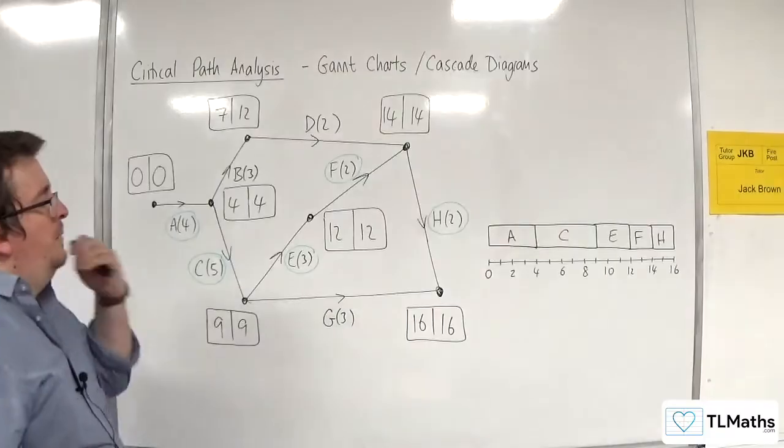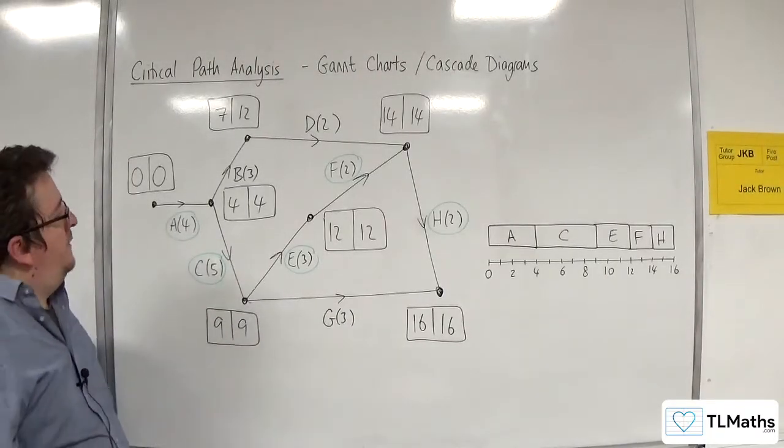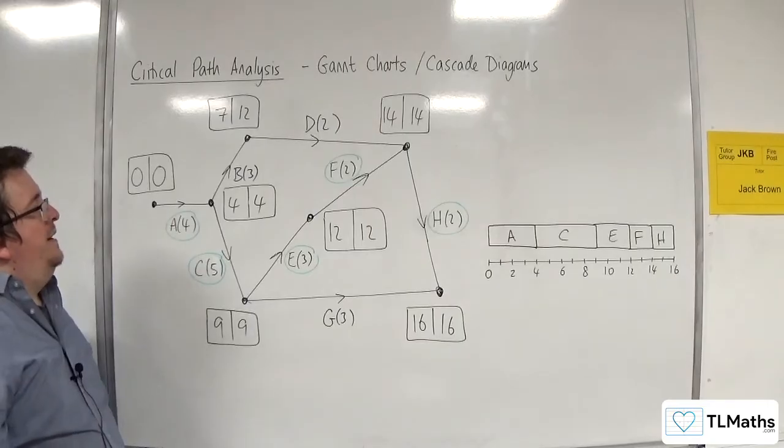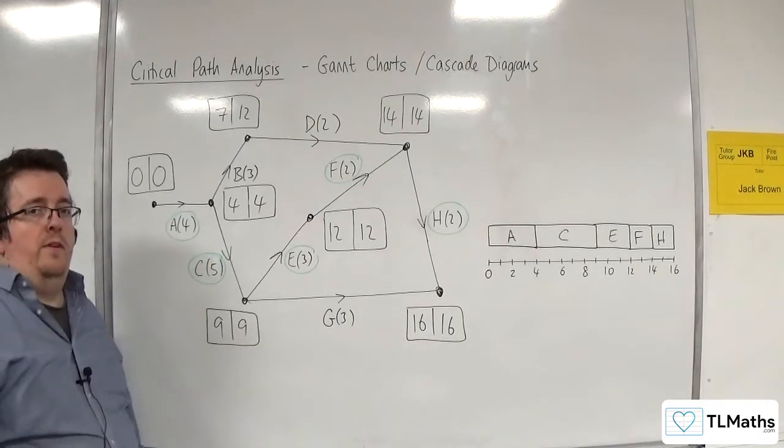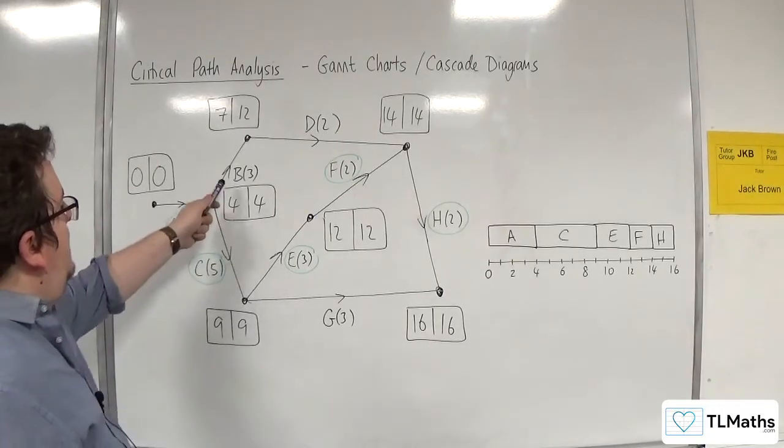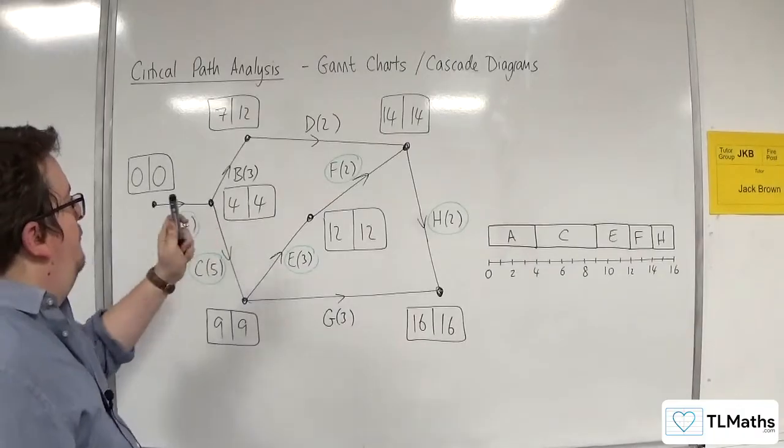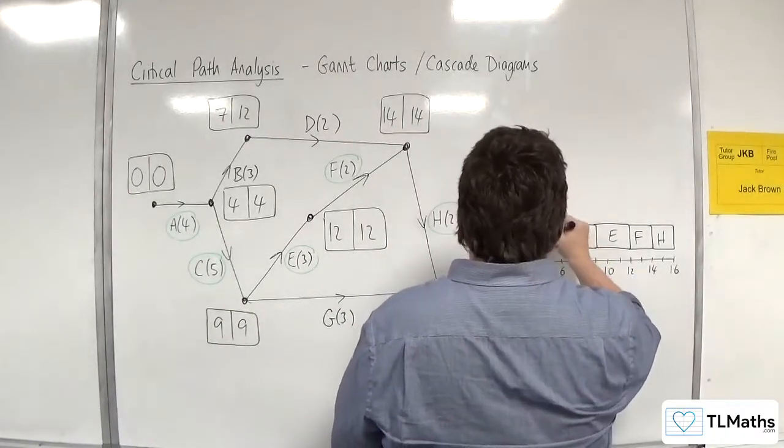So then what we need to do is draw in all of our other activities. Now, the other activities need to be drawn in with their float as well. So B can start at 4 - that's the earliest time that B can start - and it lasts 3 hours.